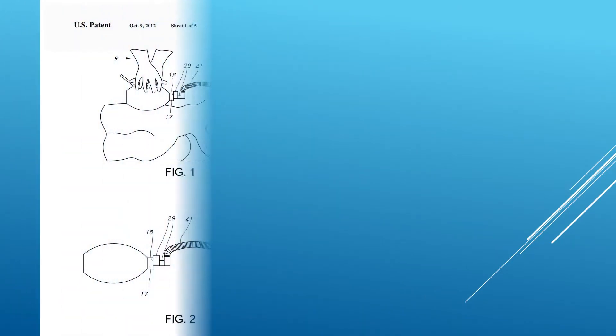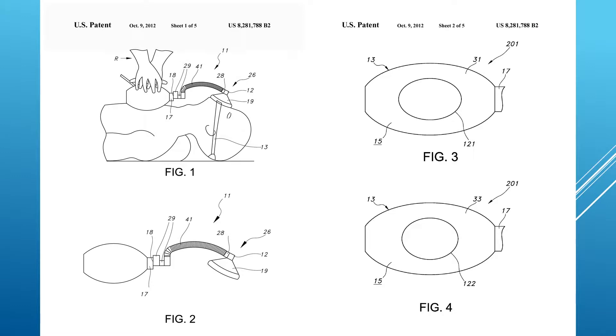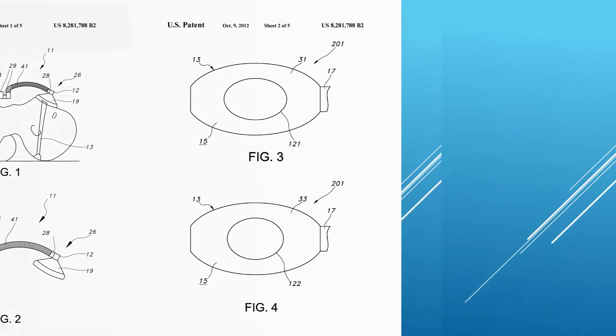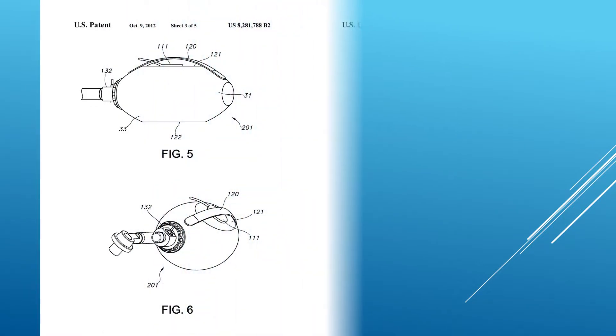Utility patent drawings show the functional elements of an invention, how a device is used and what makes it work. Important features can be emphasized and you can show what is inside of the device.